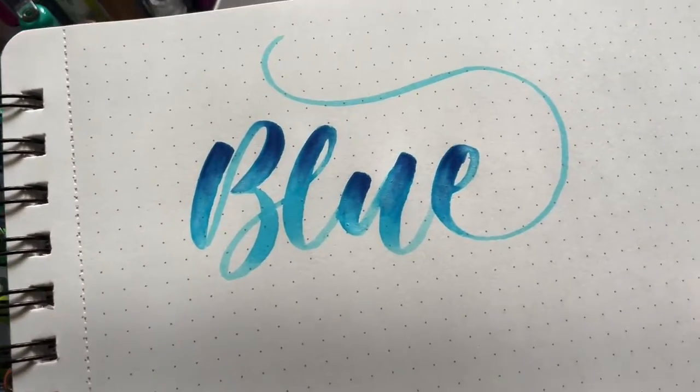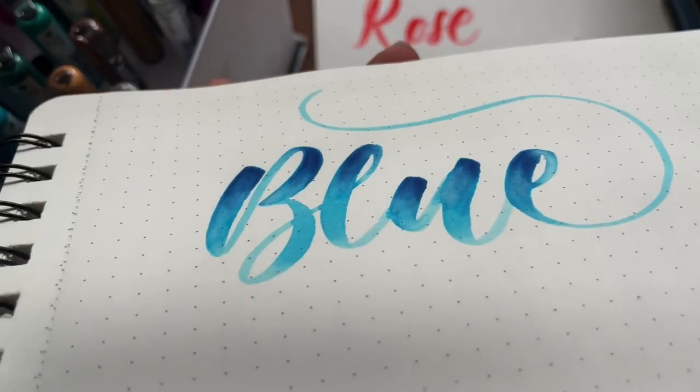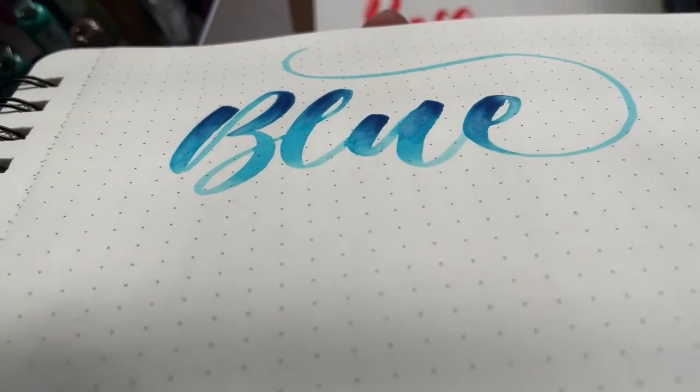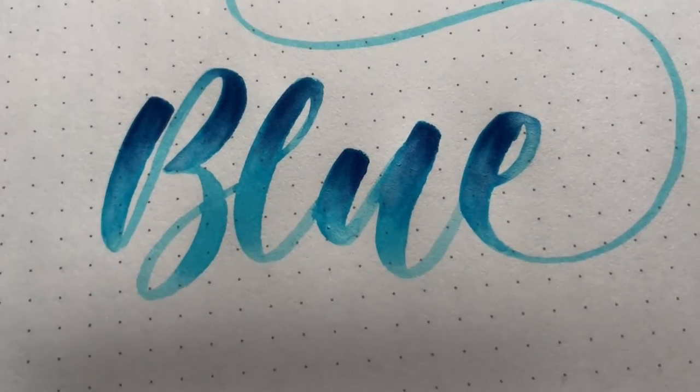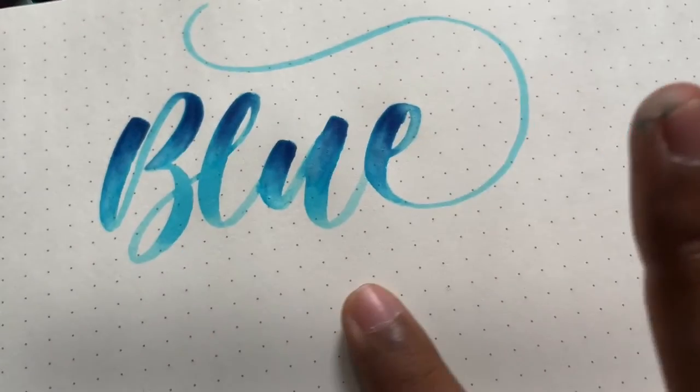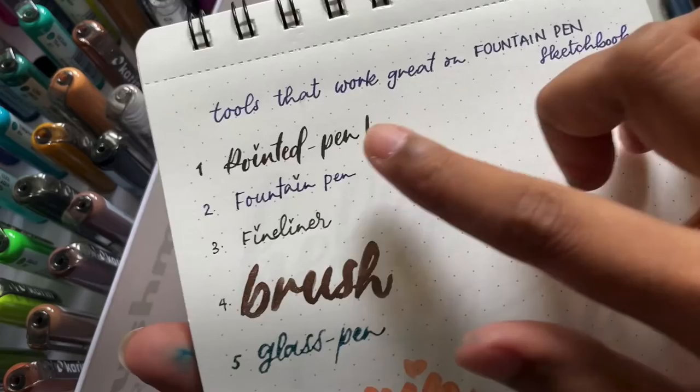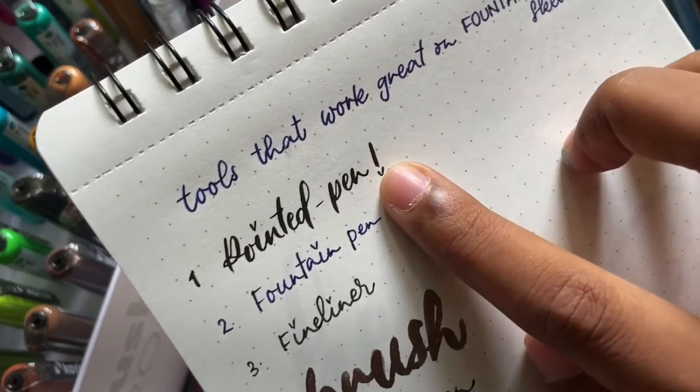It's really important to find the right kind of paper which isn't grained and has a super smooth surface, because grained or textured papers will fray your brush pens very quickly and may even lead to unsatisfactory strokes. If you're a beginner to calligraphy, it's really important to have guidelines to practice along the lines.